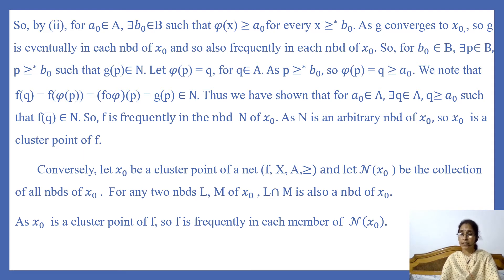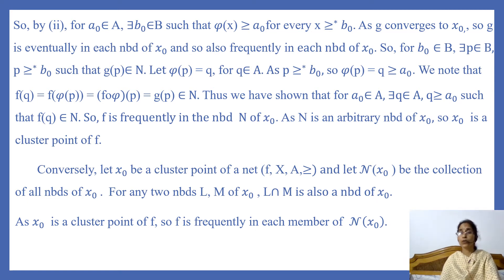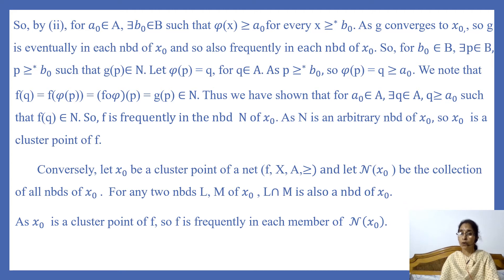Here we are applying condition 2 for the particular element a₀ of directed set A. As g converges to x₀, by definition g is eventually in each neighborhood of x₀, and hence g is frequently in each neighborhood of x₀. Since g is a mapping from directed set B to X, for b₀ in B, there exists an element p in B with p ≥* b₀ such that g(p) belongs to neighborhood N of x₀.